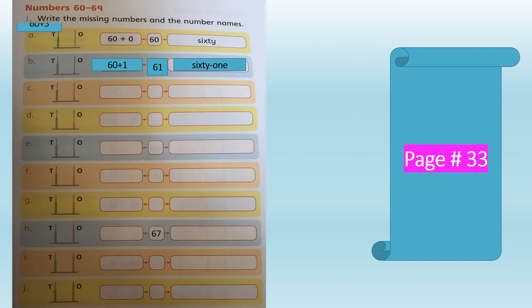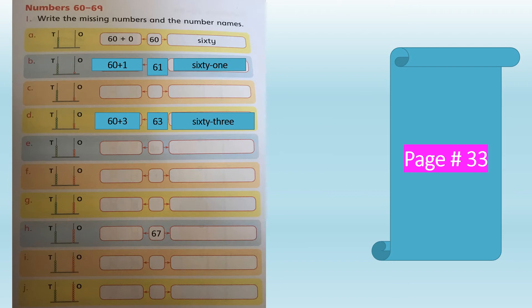In part D, count the red beads in the ones rod first — there are 3 red beads and 6 green beads in the tens rod. 6 tens makes 60, plus 3 ones makes 63. The number name is S-I-X-T-Y, hyphen or space, T-H-R-E-E, 3 — sixty-three, 63. Now fill in parts E, F, G, H, and I in the same manner by counting the beads in the ones and tens rod.